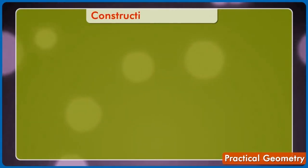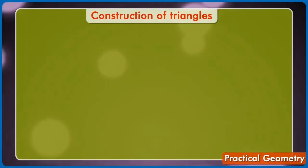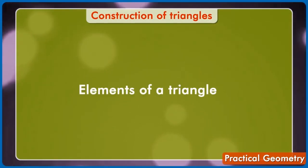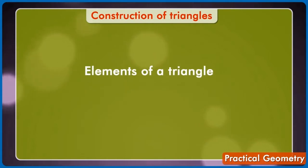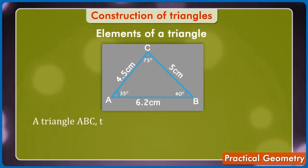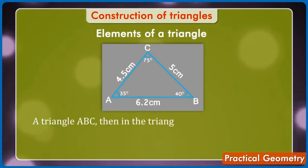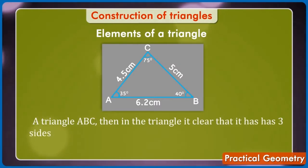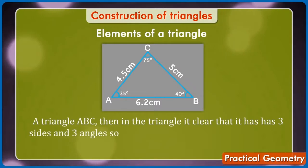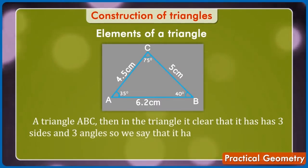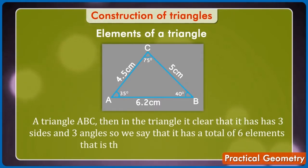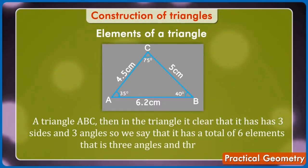Construction of Triangles. Let's first learn the elements of a triangle. Suppose we have a triangle ABC. Then in the triangle it's clear that it has three sides and three angles. So, we say that it has a total of six elements. That is, three angles and three sides.